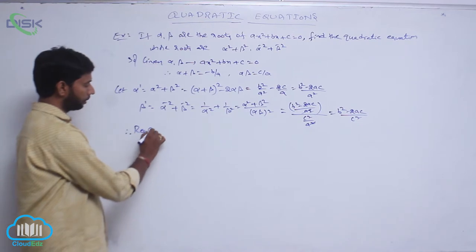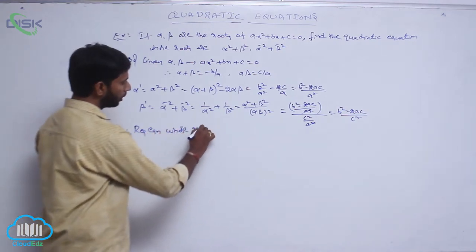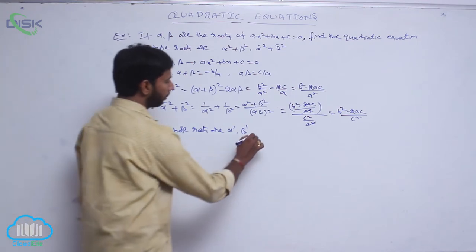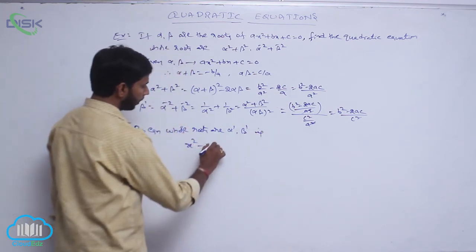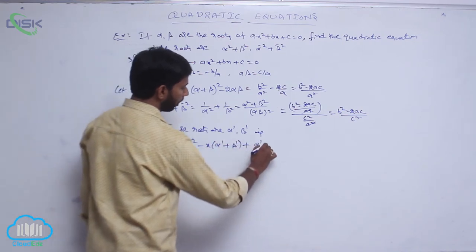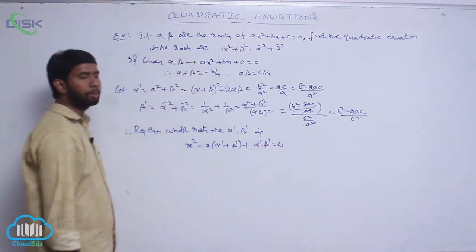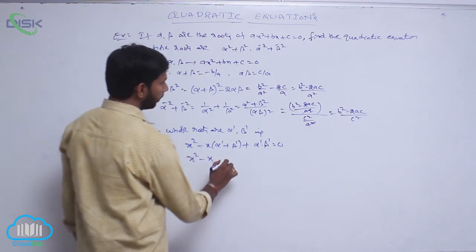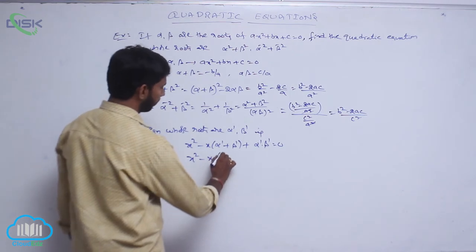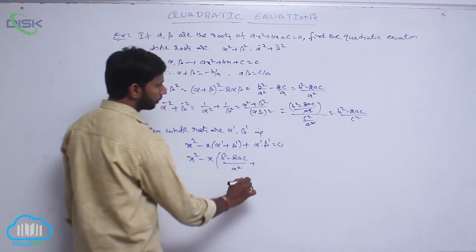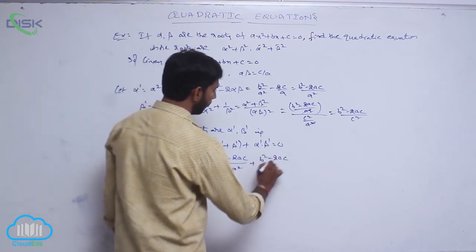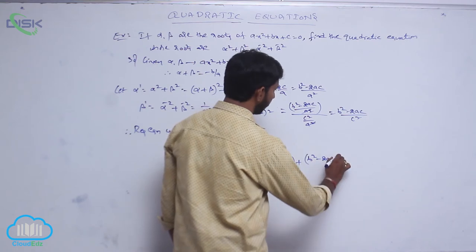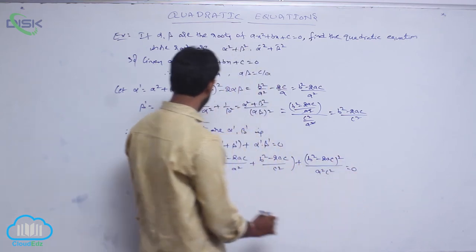Therefore the required equation whose roots are alpha' and beta' is: x² - x(alpha' + beta') + alpha'·beta' = 0. Substituting the values: x² - x[(b² - 2ac)/a² + (b² - 2ac)/c²] + (b² - 2ac)²/(a²c²) = 0. This is the required equation.